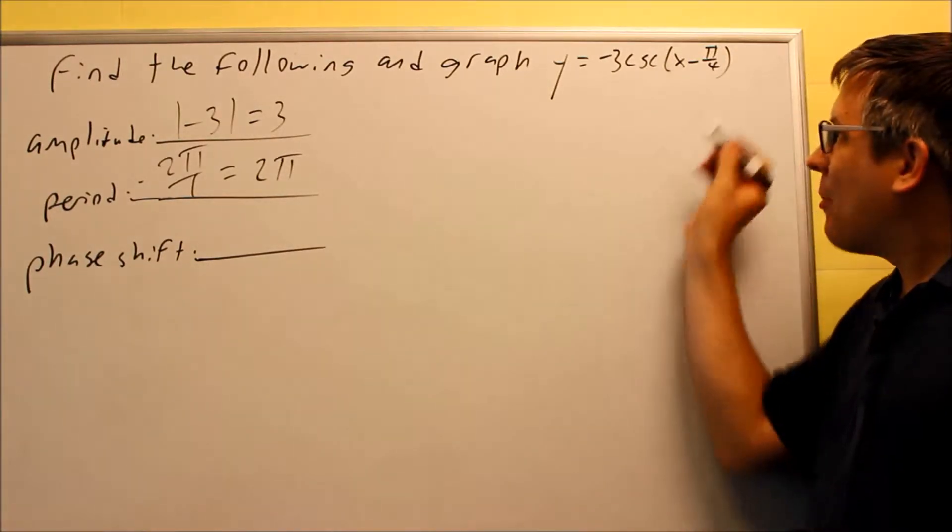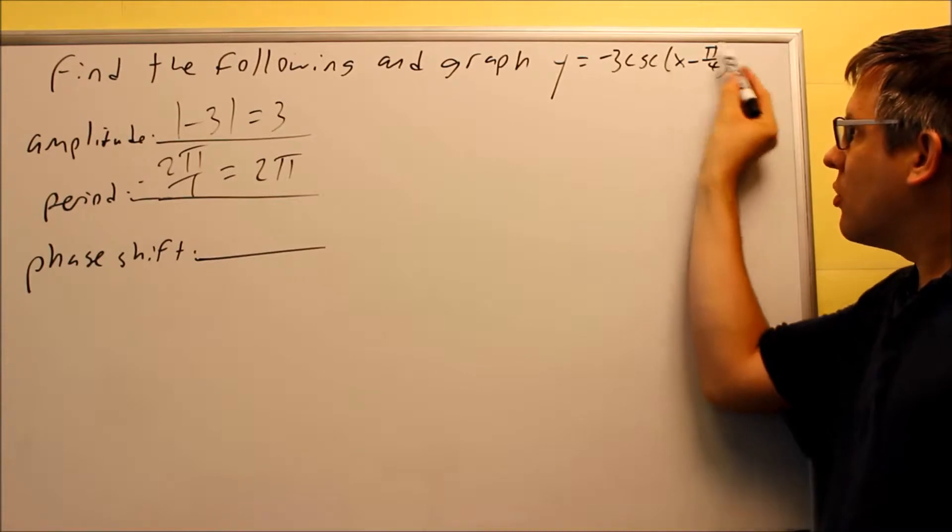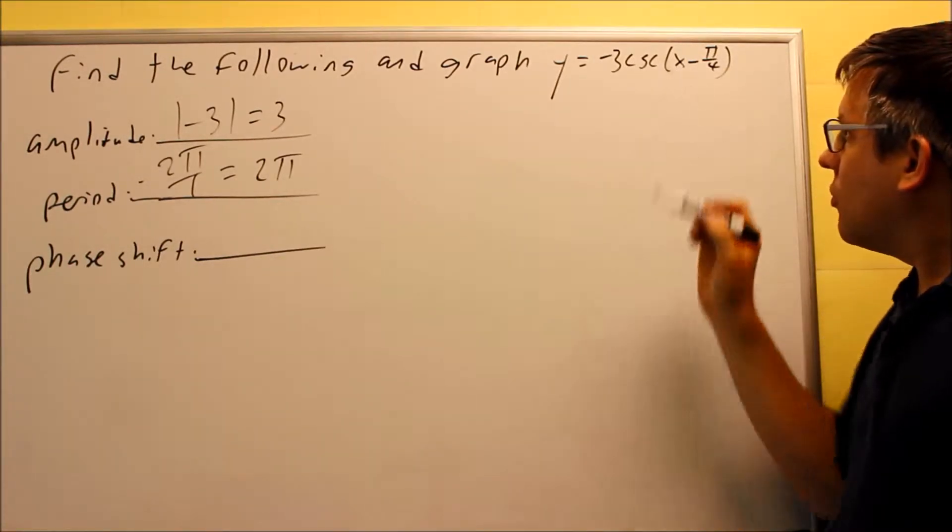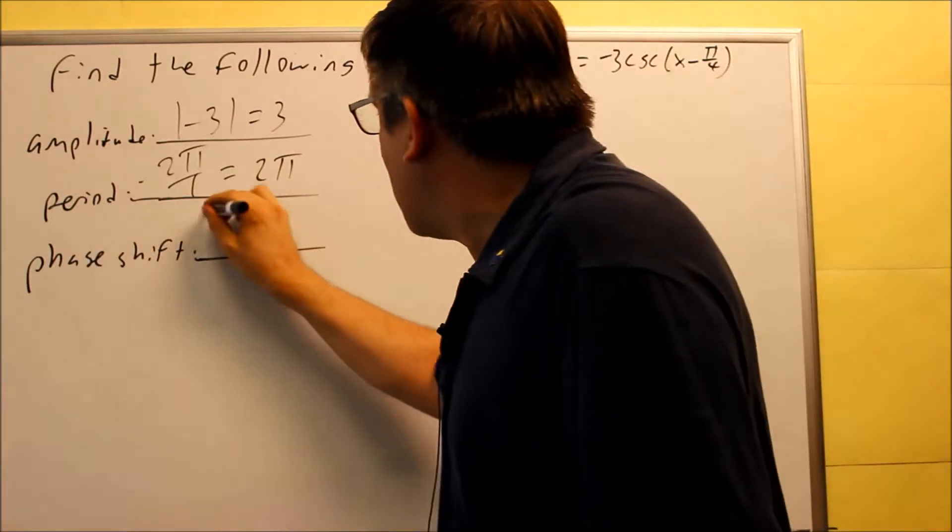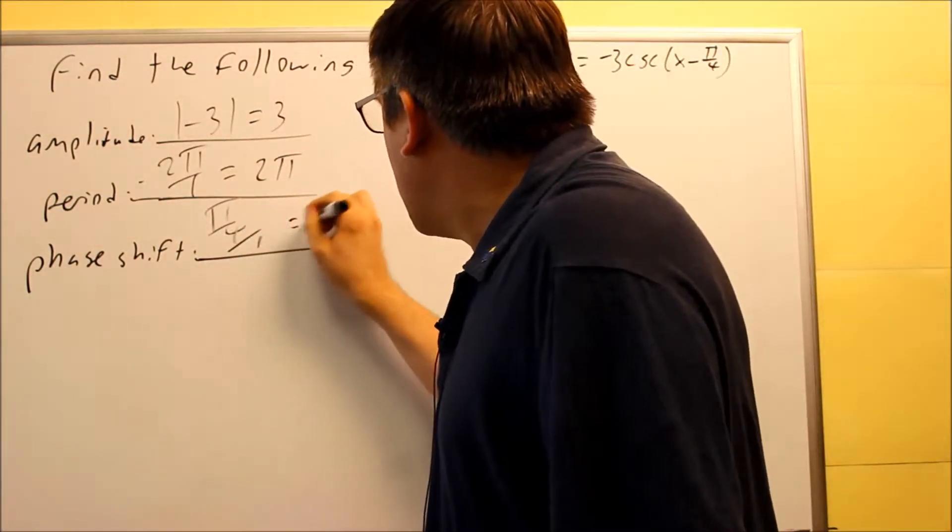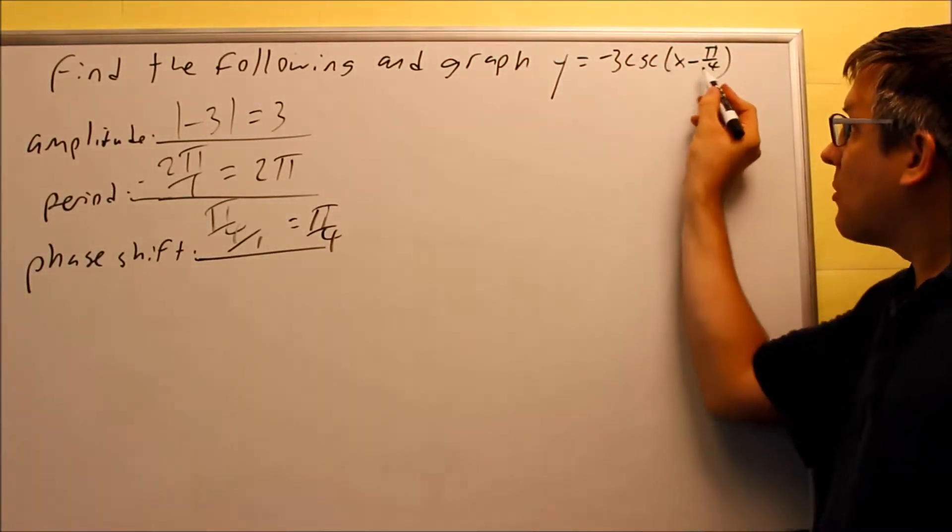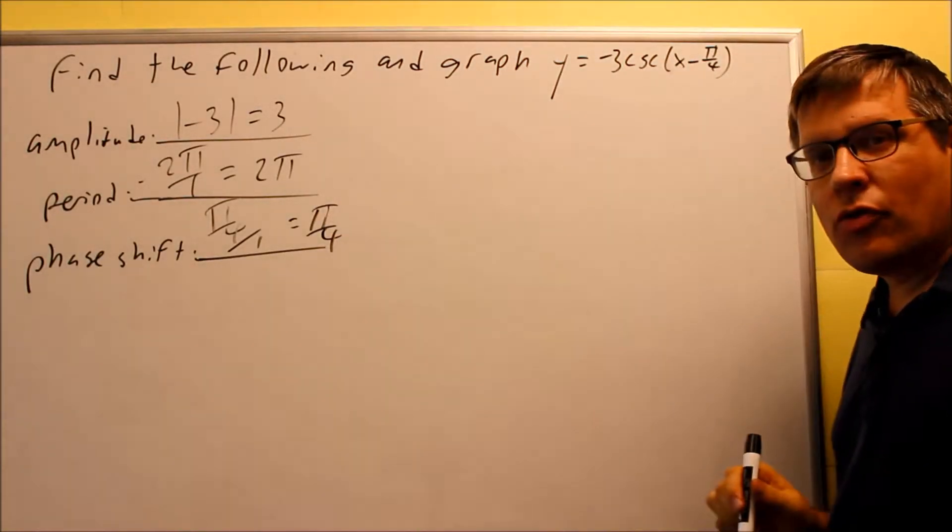Phase shift is going to be the opposite sign of your c, which is the number after the x, over b, the number in front of the x. So if you do that, it's going to be positive pi over 4 over 1. So positive pi over 4 would be your phase shift. We took the opposite sign of that, and we got pi over 4.